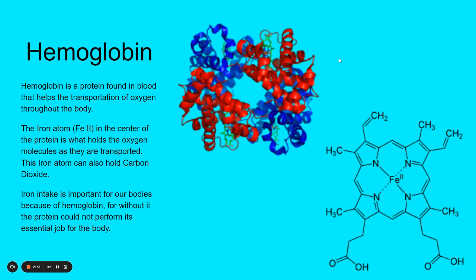Let's talk about one protein in particular just to give you an example. Hemoglobin is a protein found in blood, and it helps the transportation of oxygen throughout the body. As you can see in this structure, it's a really big carbon circle with some nitrogens in the center. Those nitrogens hold an iron atom there in the center of the protein — you can see it in the hole over here. This is where the iron atom would go, and that iron atom holds onto oxygen molecules, which allows it to be transported through the blood.